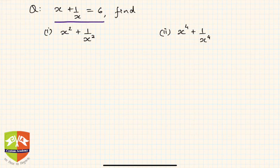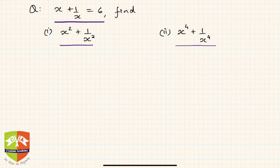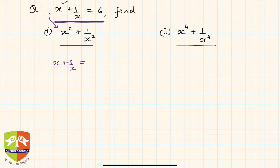The next problem: it is given that x + 1/x = 6. Based on this you have to find x² + 1/x² and x⁴ + 1/x⁴. Keep in mind that whenever you see a linear term and are expected to find the squared value, the approach that should come to mind is an algebraic identity. Since x + 1/x = 6, we can square both sides to get an x² on the left hand side.